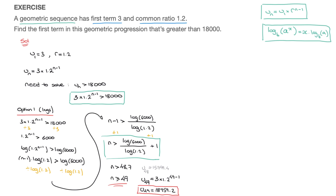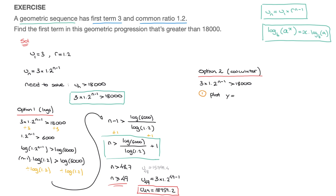Option 2 goes quite a lot faster. In option 2, we use the calculator. Since we need to solve 3 times 1.2 raised to the power of n minus 1 greater than 18,000, we'll follow two steps. Step 1 is to plot the left-hand side of this inequality. Rather than using the integer variable n, on our graphical calculator we'll use x — so we'll plot y equals 3 times 1.2 raised to the power of x minus 1.